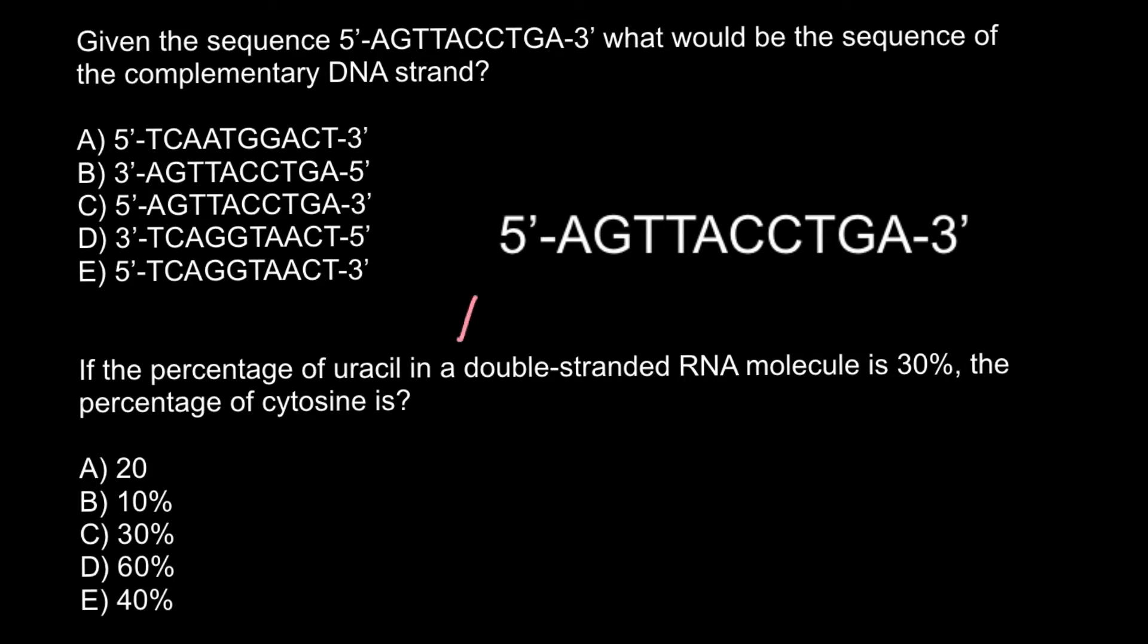In order to solve this problem, everything we have to know is that adenine always base pairs with thymine, and cytosine always base pairs with guanine. So adenine would base pair with thymine here, cytosine, adenine, adenine, here thymine, guanine, guanine, adenine, cytosine, and thymine. In double-stranded DNA, each strand goes in different directions, so we would have the 5' end here and 3' end here.